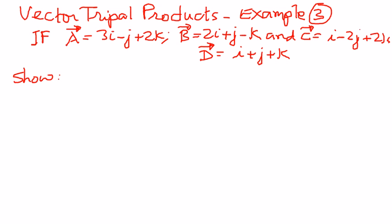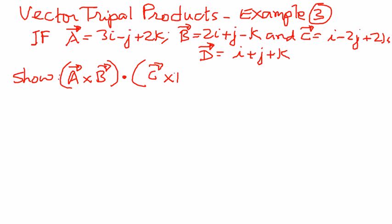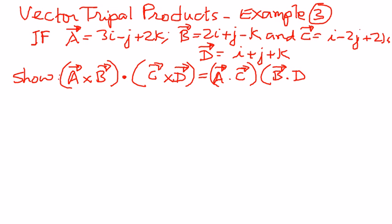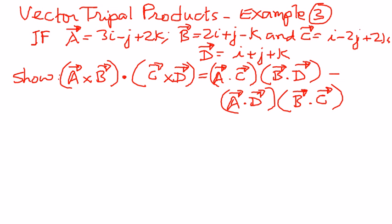We want to show that vector a cross vector b, dot product with vector c cross vector d, is the same as vector a dot vector c times vector b dot vector d, minus vector a dot vector d times vector b dot vector c. Since we have the components for a, b, c, and d, we can plug them into these expressions and see whether the left-hand side equals the right-hand side. Let's get started.